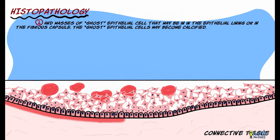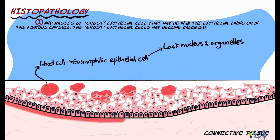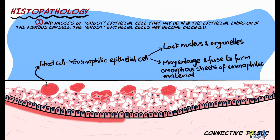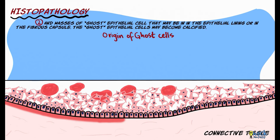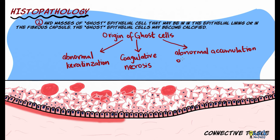There are masses of ghost epithelial cells present either within the epithelial lining or in the fibrous capsule, and these may become calcified. Ghost cells are eosinophilic epithelial cells that lack nuclei or cellular organelles; they may or may not retain their cellular outline, may become enlarged or ballooned, fuse with each other, and form amorphous sheets of eosinophilic material. Their exact nature is unknown — hypotheses include abnormal keratinization, coagulative necrosis, or abnormal accumulation of enamel proteins. These cells also have an affinity for calcification.